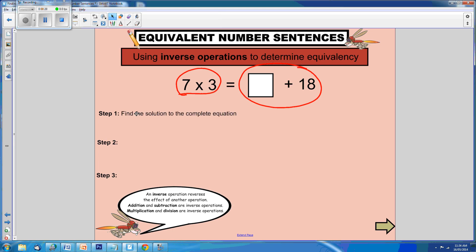Step 1 is to find the solution to the complete equation. Well, that seems pretty easy. 7 times 3 equals 21.